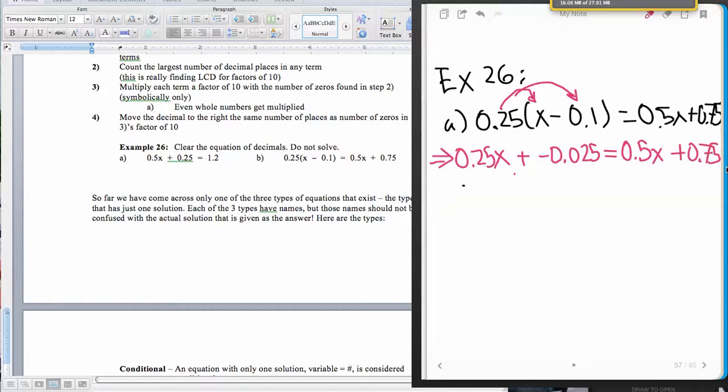Now we go through and we're going to count our number of decimals. There's 2 here. There's 1 here. There's 3 here. And there's 2 here. So the largest number is the 3 decimals right here. And so that means our LCD is going to have 3 zeros in it. So 1, 2, 3. So our LCD is 1,000.